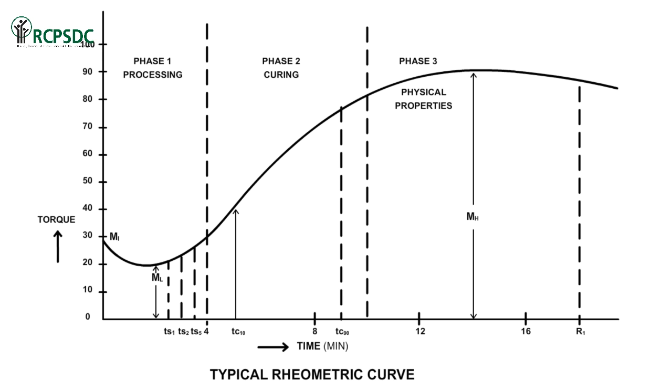The torque plot against the actual cure time is called the rheometric curve. This curve is divided into three phases.